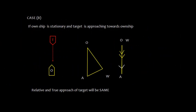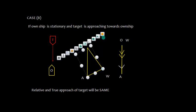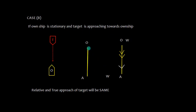Now let's study Case B. Suppose own ship is stationary and the target is approaching towards own ship. In this case, WO is going to be 0, meaning O and W coincide. OA represented by the double arrow is the relative approach of the target, and WA is the true approach of the target — it remains the same because you are stopped, so the target's relative motion equals its true motion.